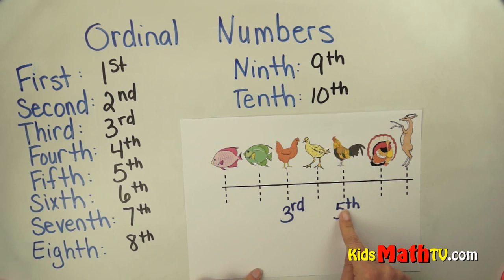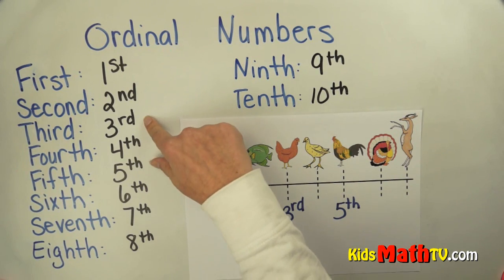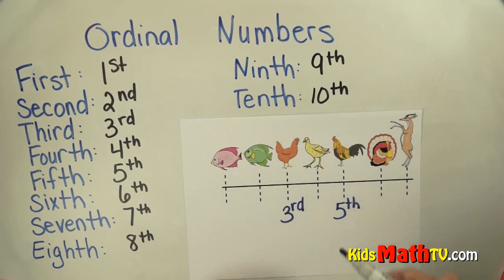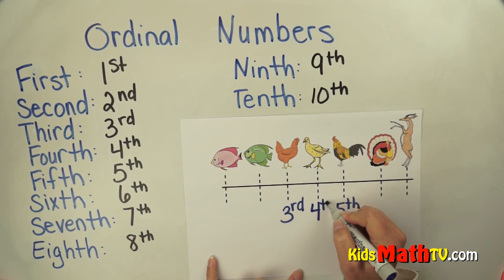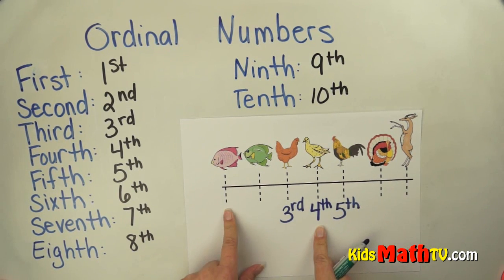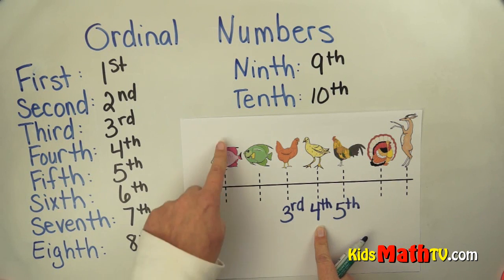What's between 3rd and 5th? Well 4th is. And we can count to make sure. 1st, 2nd, 3rd, 4th. Well what's in this place?